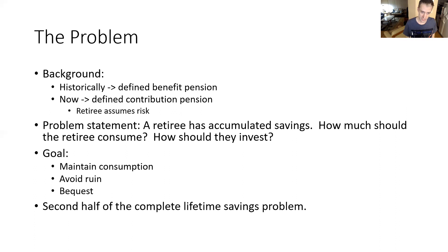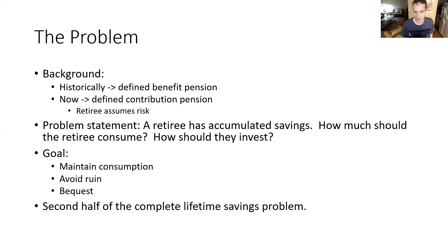Decisions about how much to withdraw and how to invest the savings are left up to the retiree — in essence, the retiree assumes the risk. The problem statement is then that a retiree who has accumulated savings over their working life needs to decide how much to consume over time and how to invest their savings over time, with goals of maintaining consumption, avoiding ruin — defined as running out of savings before death — and possibly leaving a bequest to heirs or a favored cause.